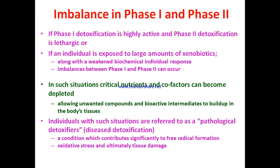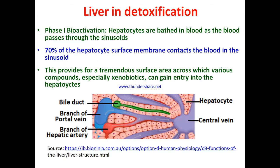Biotransformation in the liver — phase one bioactivation: hepatocytes are bathed in blood as it passes through the sinusoid. 70 percent of the hepatocyte surface membrane is in contact with blood in the sinusoid, providing a tremendous surface area for chemicals to cross into the hepatocytes.